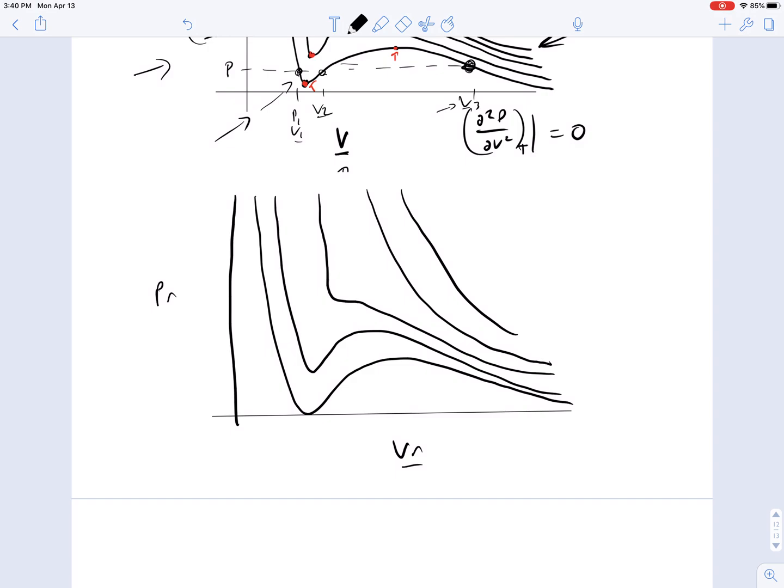So this point here, which used to correspond to TC, PC, VC, now corresponds to TR equals 1, PR equals 1, VR equals 1.